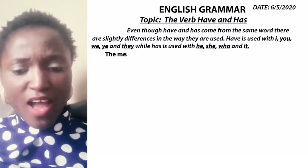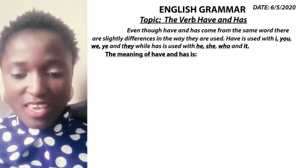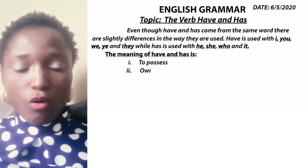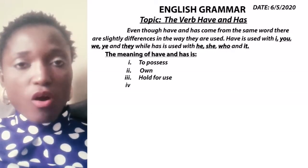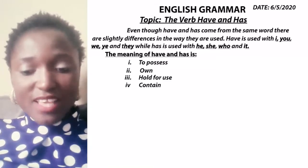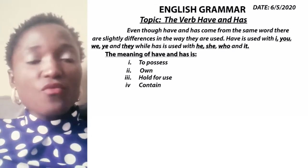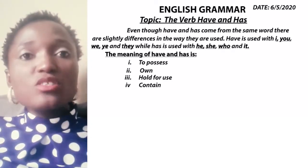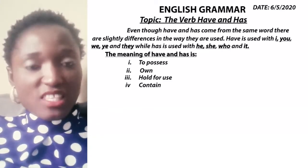Now let's look at the meaning of have and has. The meaning of have and has is: one, to possess; two, own; three, hold for use; four, contain. It also means possession — to possess, to show ownership of a thing. For example, this is my bag. It shows I am the owner of that bag. It does not belong to you. It shows ownership and possession.